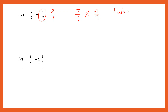Next one: the first fraction given is 9 by 7, and the second is again a mixed number. Let's convert it: 7 ones are 7 plus 1 gives 8 by 7. So the two fractions are 9 by 7 and 8 by 7. The statement says they are equal. As you can see they are not equal, so this statement is also false.